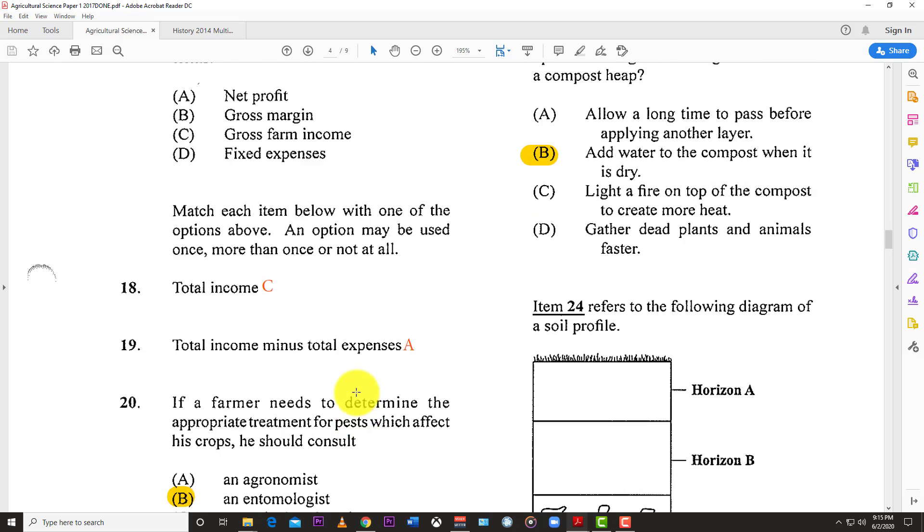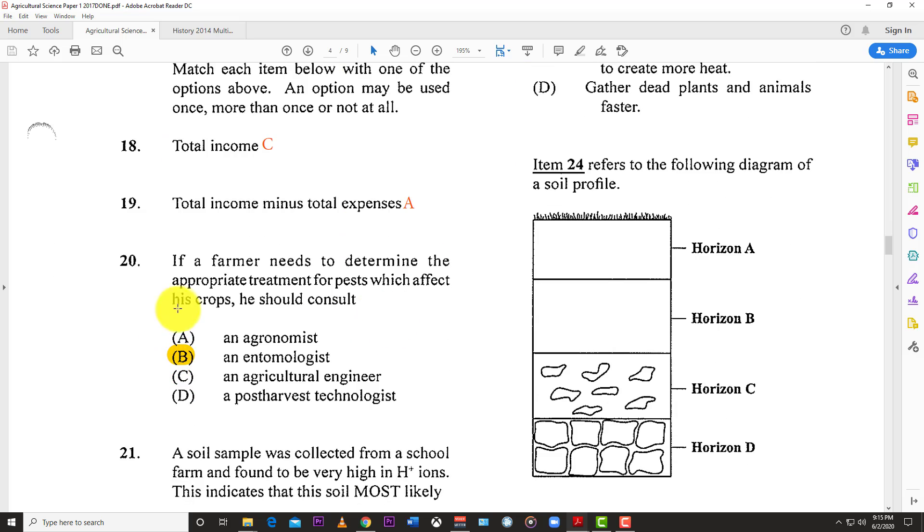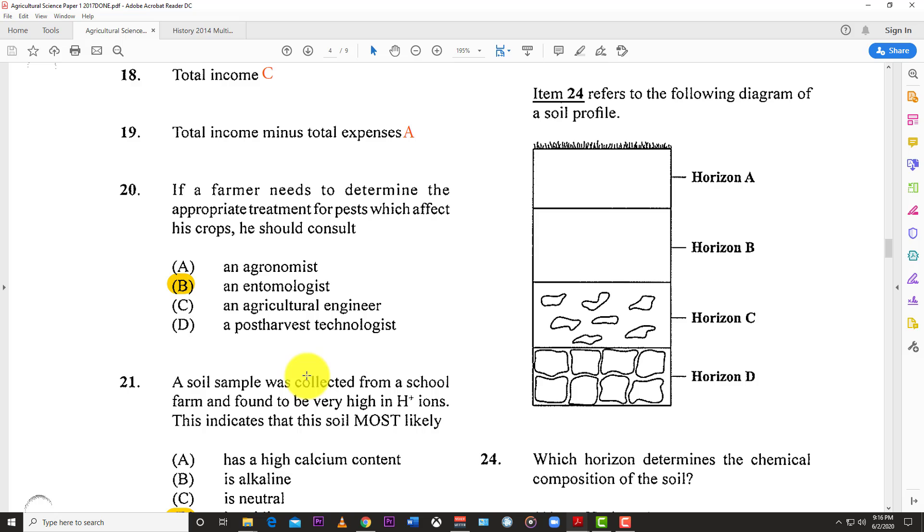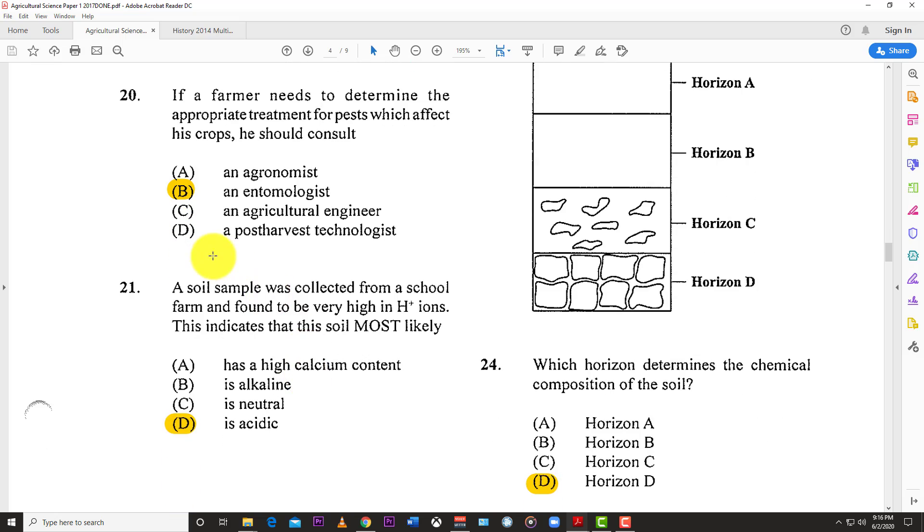Number twenty: If a farmer needs to determine the appropriate treatment for pests which affect his crop, he should consult an entomologist. They deal with insects. An entomologist is someone who deals with insects, so the best answer is B.